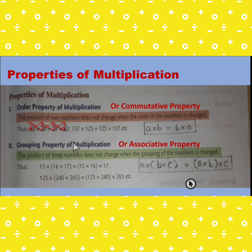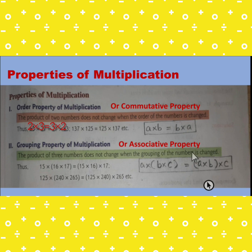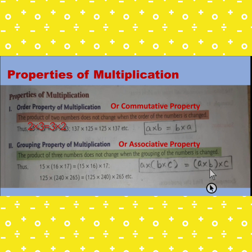The second is the grouping property of multiplication, also called the associative property. The product of three numbers does not change when the grouping of the numbers is changed. When we take two numbers it is the commutative property; when we take three numbers it is the associative property. It is A into (B into C) equals (A into B) into C. The result remains the same.